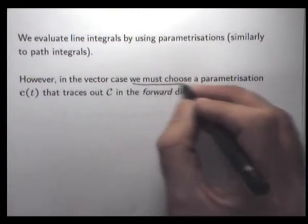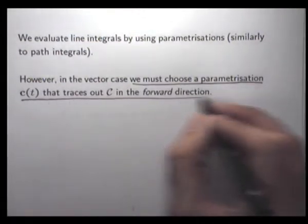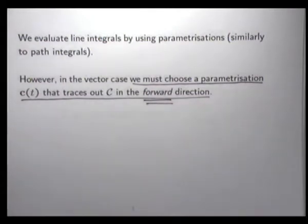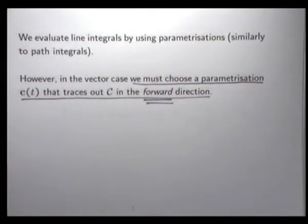We must use a parametrisation c that traces out curly C in the forward direction. That's important. For path integrals, we didn't really care about that.